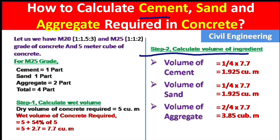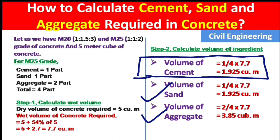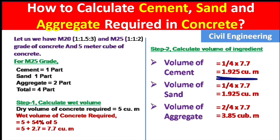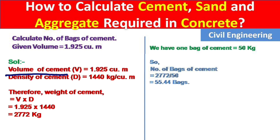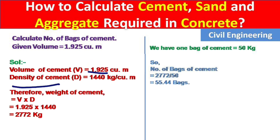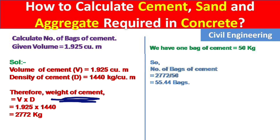In this way we can calculate the total ingredients — cement, sand and aggregate — for a required amount of concrete. We can measure the volume of sand and aggregate directly, but cement is found in bags. So let us also convert the volume of cement into number of bags. Given volume of cement is 1.925 cubic meters and the density of cement is 1440 kg per cubic meter.